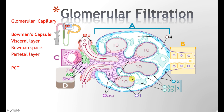To understand how glomerular filtration works, we need to go behind the scenes and know the structures. First, this purple line surrounding the whole glomerulus is your glomerular basement membrane. The next structure is Bowman's capsule, which consists of a parietal layer — the cells labeled number two here — and this is a simple squamous epithelium layer.